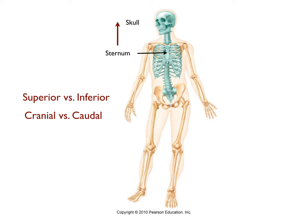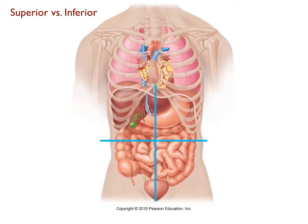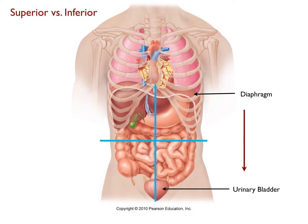While the terms cranial and caudal are not used often in a first semester anatomy course, they are used more frequently in second semester courses when dissecting the fetal pig. For now, keep in mind that these terms are interchangeable. Let's do one more example with superior and inferior. Let's assume that we're asked to describe where the urinary bladder is in relation to the diaphragm, a muscle involved in respiration. Because the arrow points away from the head, we say that the urinary bladder is inferior or caudal to the diaphragm.